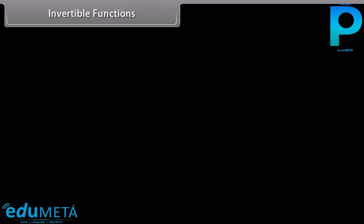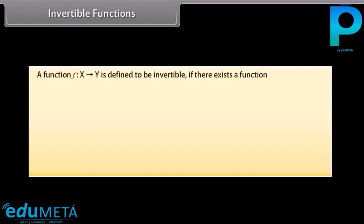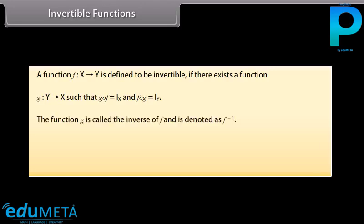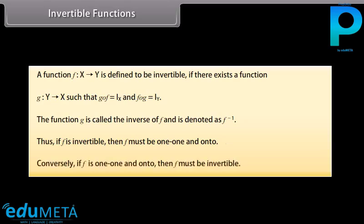Invertible functions: A function f from X to Y is defined to be invertible if there exists a function g from Y to X such that g∘f equals the identity on X and f∘g equals the identity on Y. The function g is called the inverse of f. Thus, if f is invertible, then f must be one-to-one and onto. Conversely, if f is one-to-one and onto, then f must be invertible.